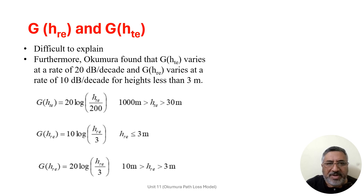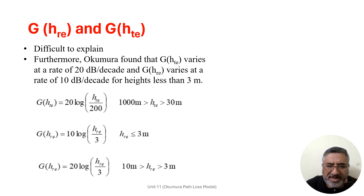The Okumura model is wholly based on measured data and does not provide any analytical explanation, making it difficult to explain theoretically. Furthermore, Okumura found that two height-related parameters — the height of the transmitter and the height of the receiver antenna — vary at different rates in decibels per decade.